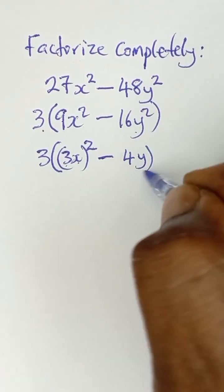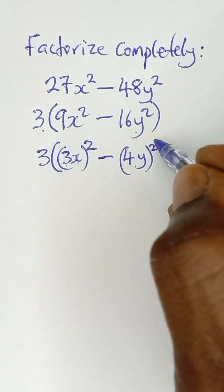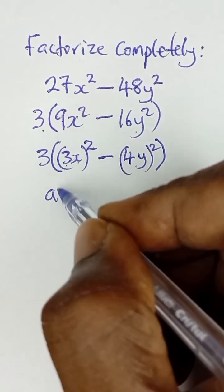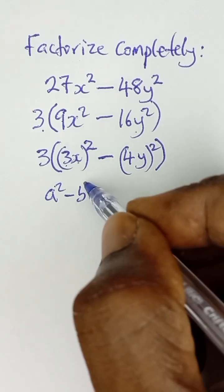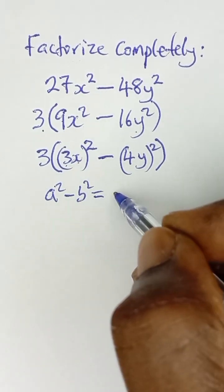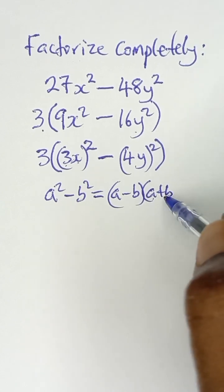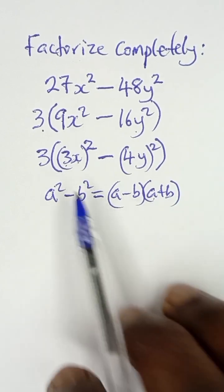Now there's a rule that says when you have a² minus b², it can be factored as (a - b) multiplied by (a + b). So this is the rule we are going to apply because this is a difference of two squares.